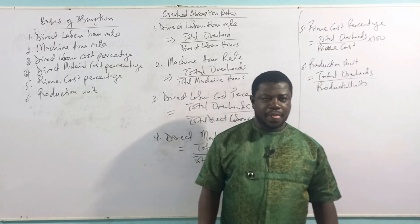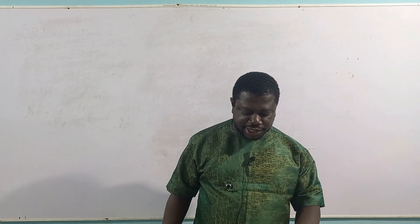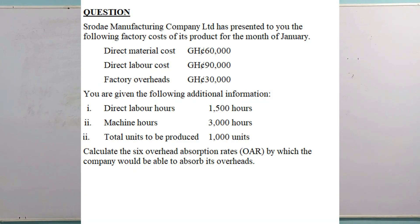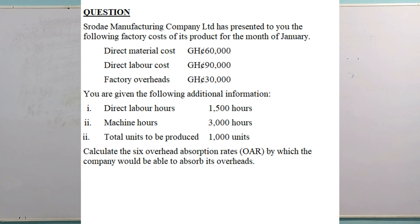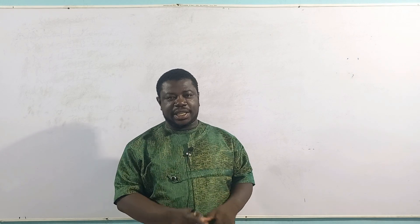I am sure this is very understandable. So without wasting time, let us solve a question. Srodai Manufacturing Company Limited has presented the following factory cost of its production for the month of January: direct material cost — 60,000 Ghana cedis; direct labor cost — 90,000 Ghana cedis; factory overhead — 30,000 Ghana cedis. Additional information: direct labor hours — 1,500 hours; machine hours — 3,000 hours; total units to be produced — 1,000 units. You are required to calculate the 6 overhead absorption rates by which the company will be able to absorb its overheads.